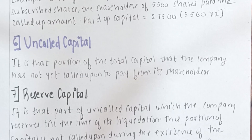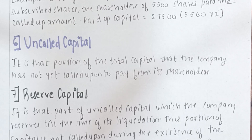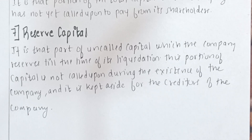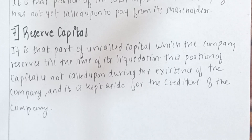Sixth is uncalled capital — it is that part of the total capital that the company has not yet called upon its shareholders to pay. This is the amount which the shareholders have not yet paid. And the last one is reserve capital — it is that amount which a company does not use until and unless it goes bankrupt.